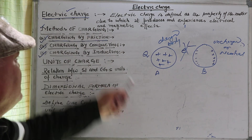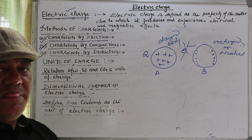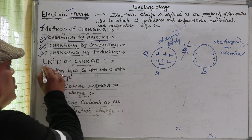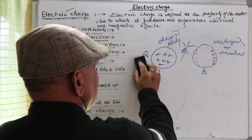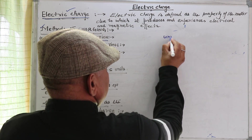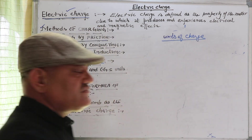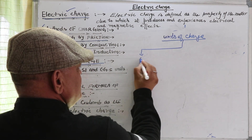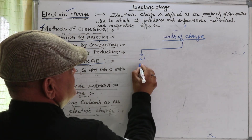So these are the three methods by which we can charge a body. Our next article is units of charge.